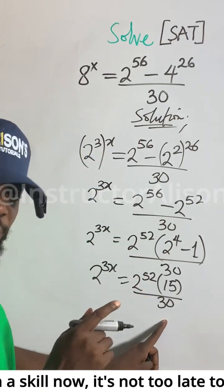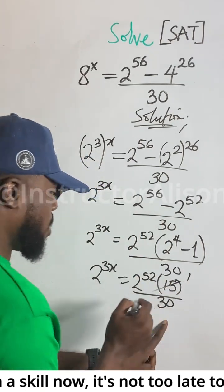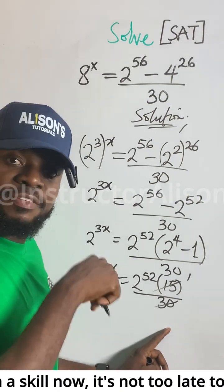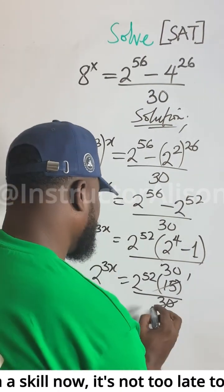Now we reduce: this one going to itself — 1 into 30. 15 going into 30 — how many times does 15 go into 30? Two times.